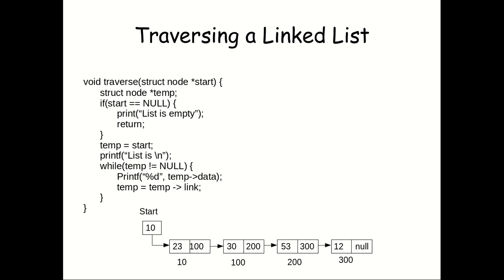Initially in the traverse function we are taking a parameter 'start', which is basically a start pointer through which we will access the linked list. We have declared a temporary node, and then we are checking if start equals null — that means if we are getting an input as an empty list, it will return and print 'the list is empty'.